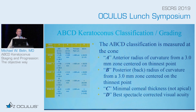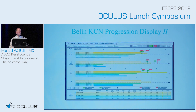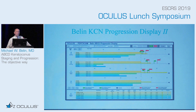Amsler-Krumeich was a measurement based on the center of the cornea, while the ABCD is measured on the thinnest point — basically the center of the cone. A was for the anterior radius of curvature taken from the three-millimeter zone centered on the thinnest point. B was for back, or posterior radius of curvature. C was the thinnest pachymetry, not just the central apical reading, and D was distance visual acuity. But the real goal of developing the ABCD wasn't just the classification — it was to allow a progression display to determine when each anatomical layer has statistically changed. This is what the second iteration of the display looks like.